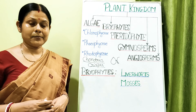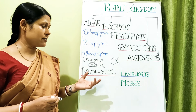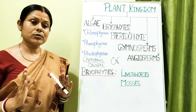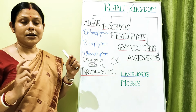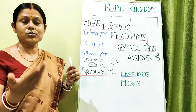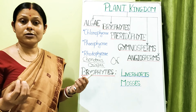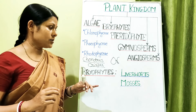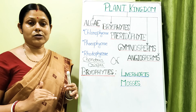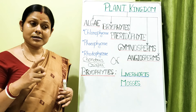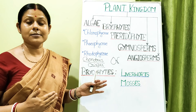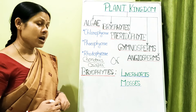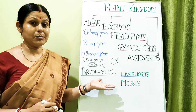The haplodiplontic type means there is a haploid gametophytic plant body — both male and female — but the sporophyte also takes a significant part in the life cycle. Unlike algae, where the sporophyte was only the zygote and quickly underwent meiosis, in bryophytes — especially mosses — the sporophyte is quite elaborate, though still dependent on the gametophyte. So we call this haplodiplontic alternation of generation.